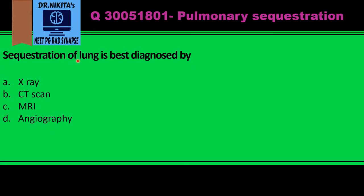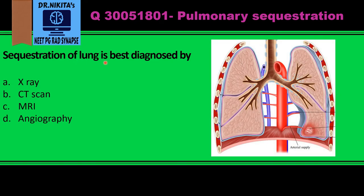Sequestration of lung is best diagnosed by — to answer this question, we must first know what we mean by sequestration of lung. Lung sequestration is a congenital malformation where a tissue of lung has become separated from the bronchial tree.